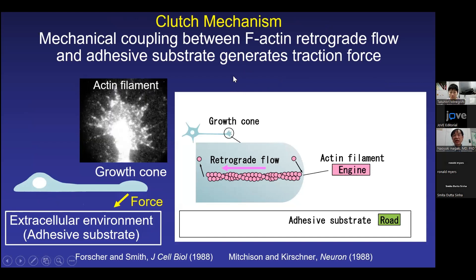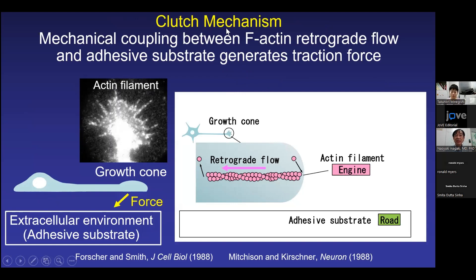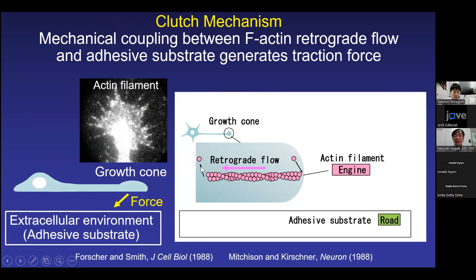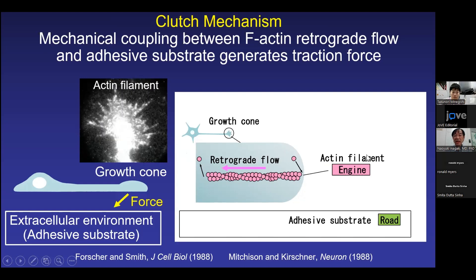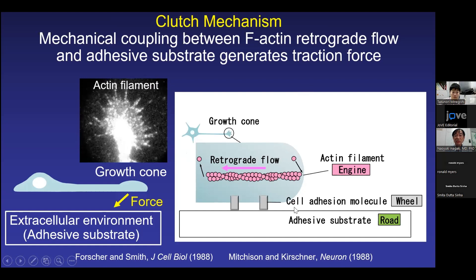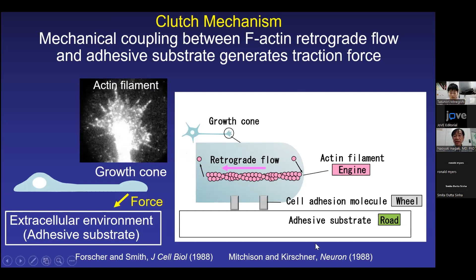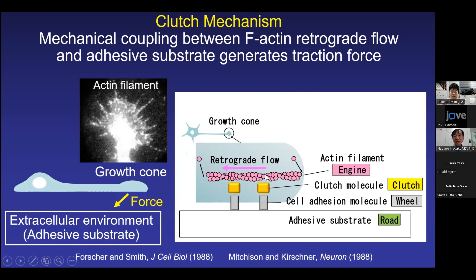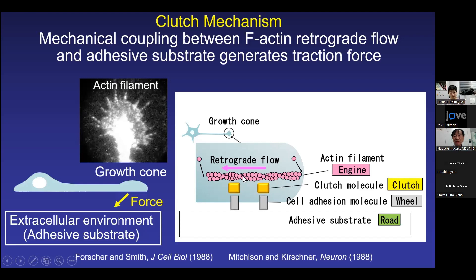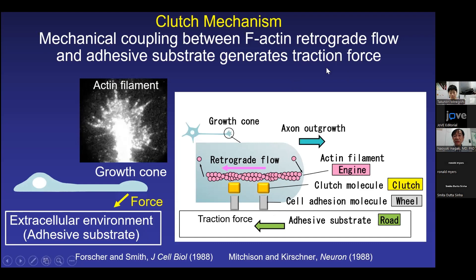How such traction force is formed can be explained by the clutch mechanism proposed by Mitchison and Kirschner. At the leading edge of the growth cone, actin filaments undergo directional polymerization and depolymerization and flow retrograde — this is actin retrograde flow, which plays the role of the engine of the force-generating machinery. Growth cones also express cell adhesion molecules, which play the role of the wheel, and the adhesive substrate plays the role of the road. If a linking molecule mechanically couples actin flow and cell adhesion molecules — such a molecule is called a clutch molecule — it will transmit the movement of actin flow to the substrate and produce traction force for axon outgrowth.